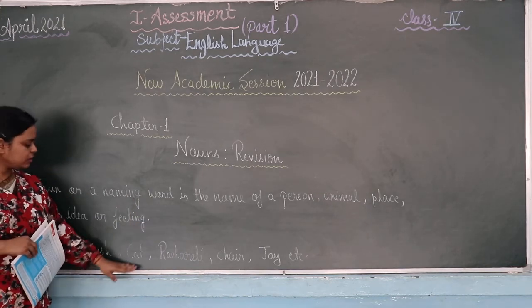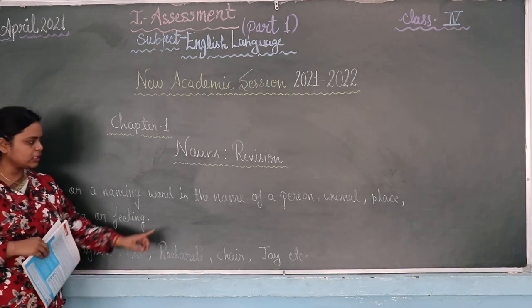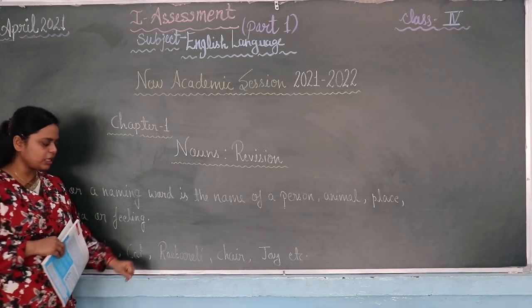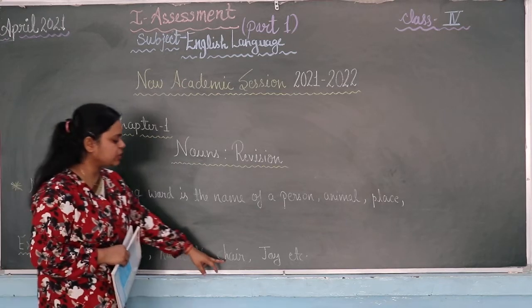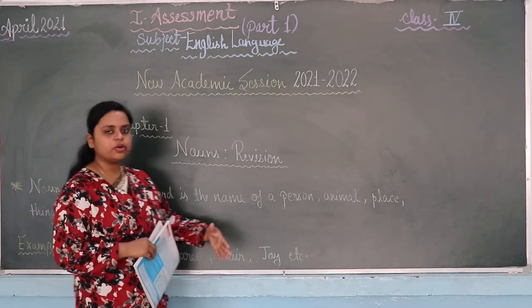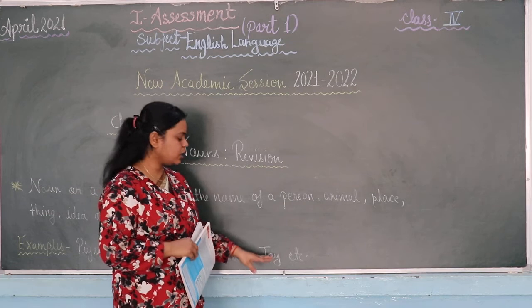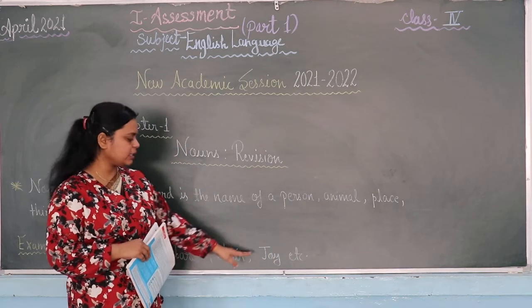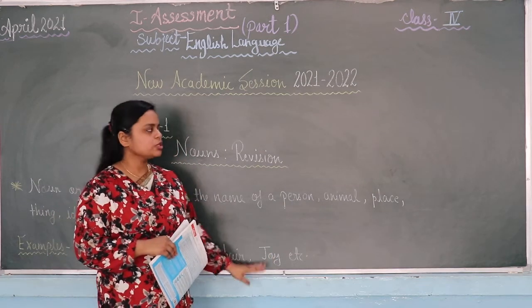Name of an animal — that is cat. Name of a place — that is rivalry. Name of a thing — that is chair. Name of a feeling and idea — that is joy.